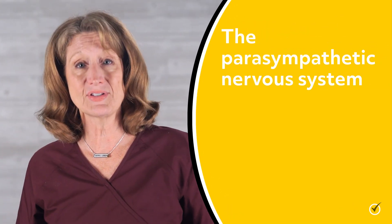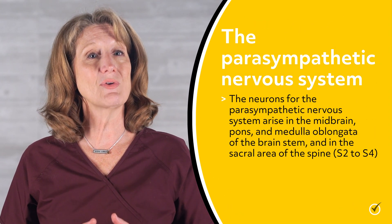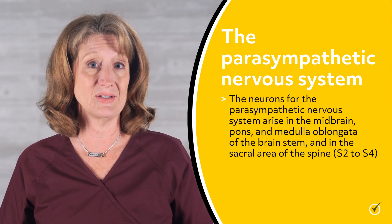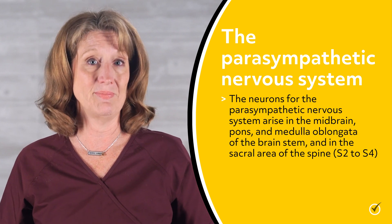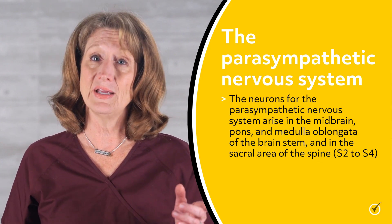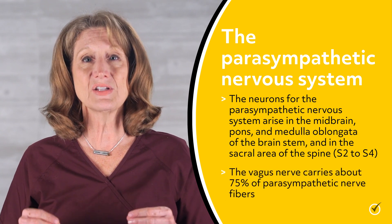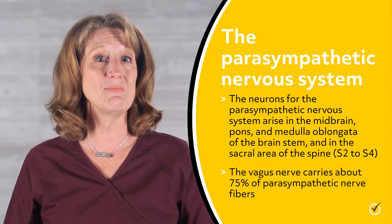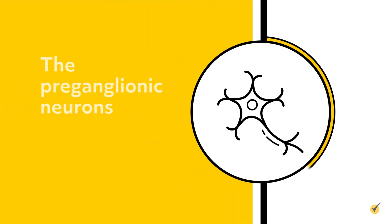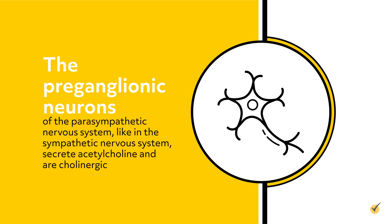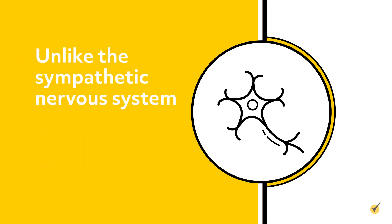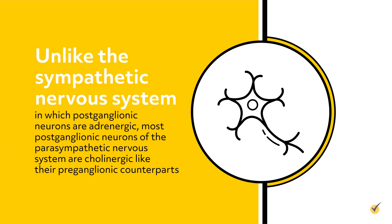Now, let's look at the parasympathetic nervous system. The neurons for the parasympathetic nervous system arise in the midbrain, pons, and medulla oblongata of the brain stem, and in the sacral area of the spine, or S2 to S4. The vagus nerve carries about 75% of parasympathetic nerve fibers. The preganglionic neurons of the parasympathetic nervous system, like in the sympathetic nervous system, secrete acetylcholine and are cholinergic. However, unlike the sympathetic nervous system, in which postganglionic neurons are adrenergic, most postganglionic neurons of the parasympathetic nervous system are cholinergic, like their preganglionic counterparts.